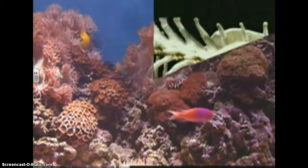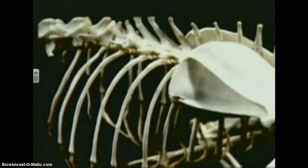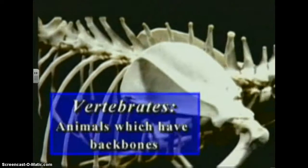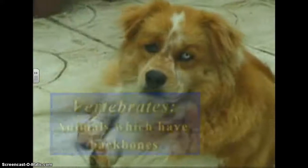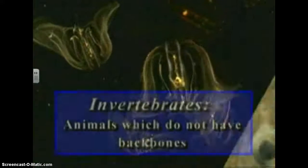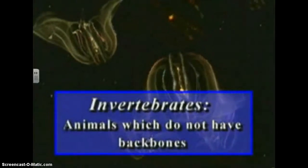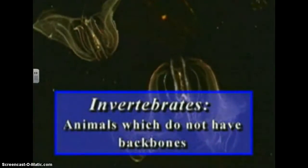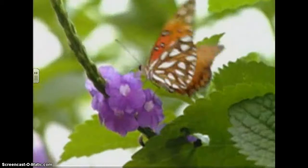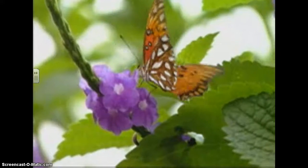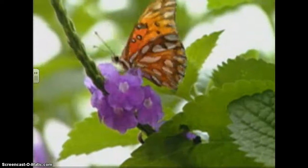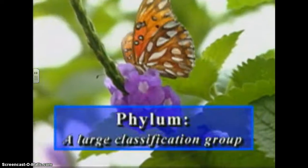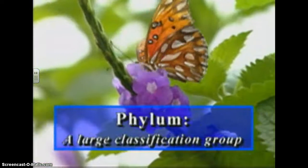One of the most basic ways of classifying animals is into vertebrates, animals which have backbones, and invertebrates, animals which do not have backbones. Beyond those two very broad classifications, animals are classified into a particular large classification group, or phylum, depending on their traits.